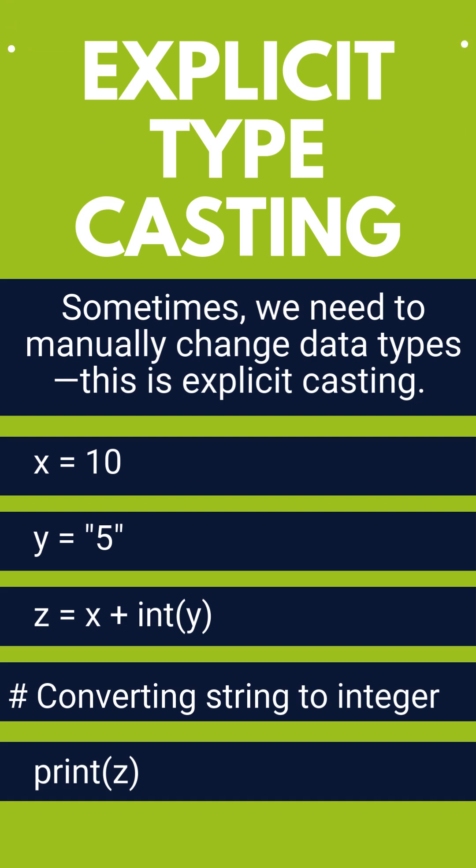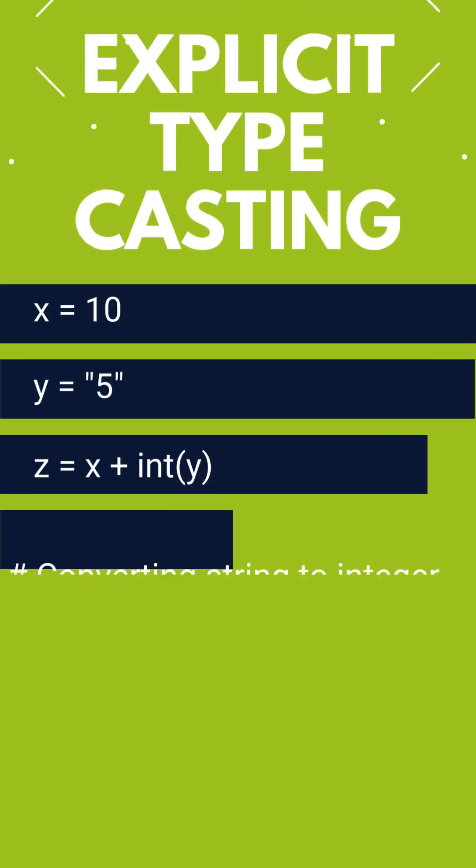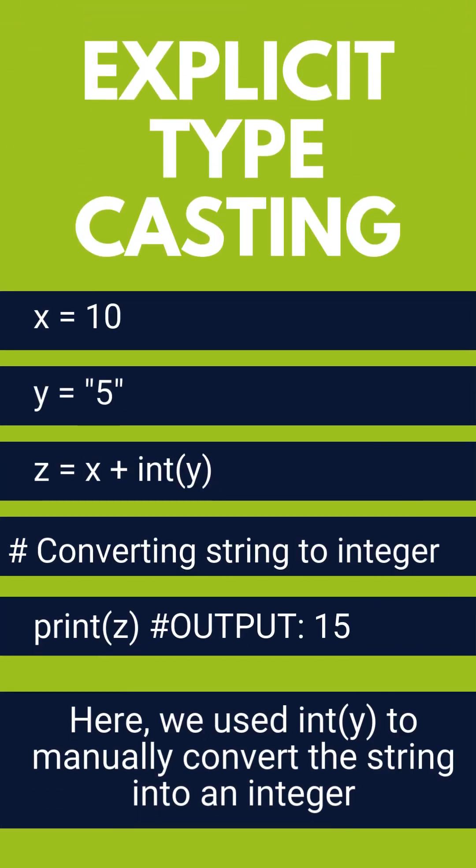x is 10 and y is 5. But 10 value is of integer type and 5 is of string type. Now we know that we cannot add an integer with a string value. So what are we doing here? We are converting this y into the integer format so that we can perform the addition.